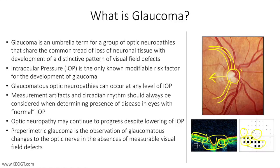In the distant past, glaucoma was thought to be a disease of elevated pressure in the eye, or intraocular pressure. However, we now know that glaucoma can happen at what was thought to be normal pressure, basically between 10 and 21 millimeters of mercury, and we no longer use IOP as part of our definition of glaucoma. Still, intraocular pressure is an important risk factor for glaucoma and is the only modifiable risk factor that we can do something about.